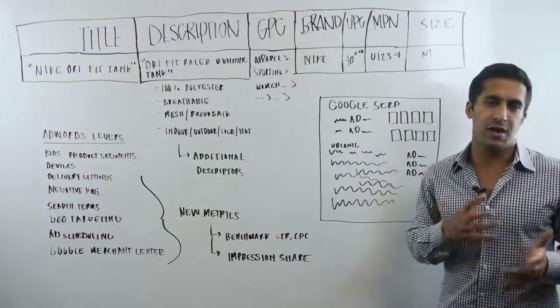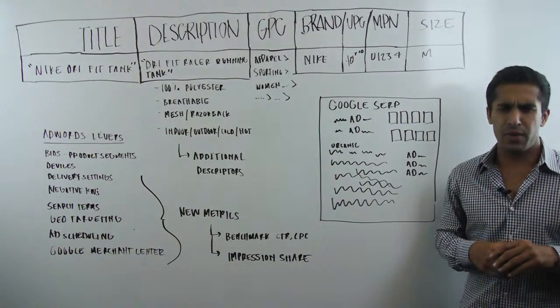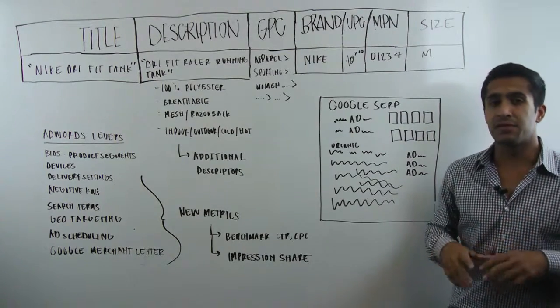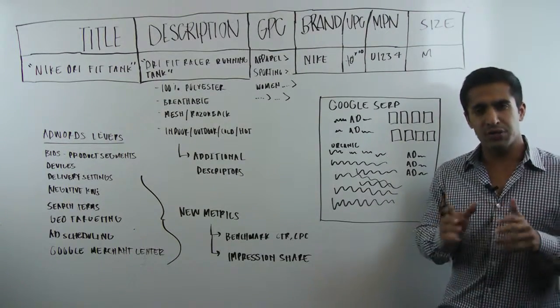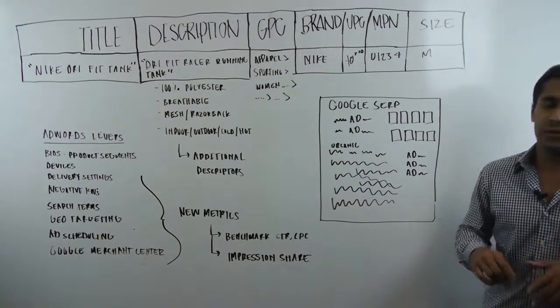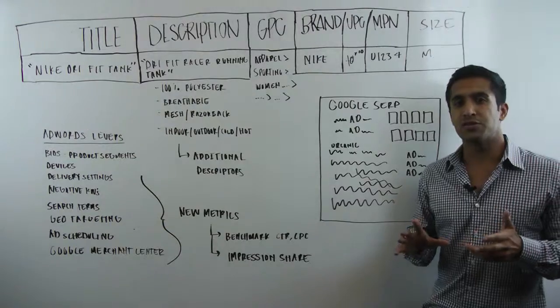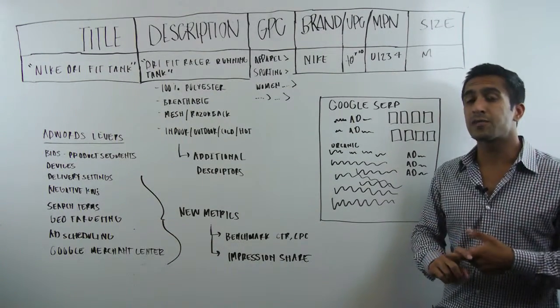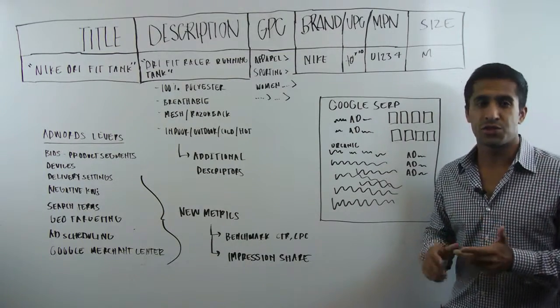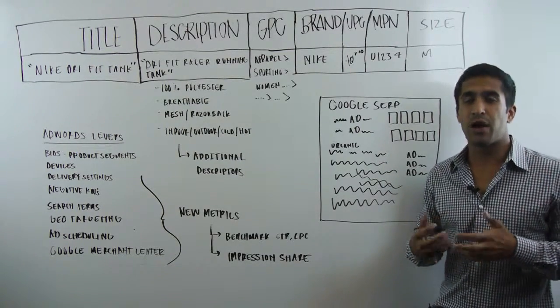But before we dive into a lot of the specifics around Google Shopping, I would like to talk about the key differences. With traditional text ads, we're bidding on keywords. We're drilling directly into blue dress shirt and deciding that's exactly where I want my text-based ad to show up. With product listing ads or Google shopping, we're bidding on actual products.